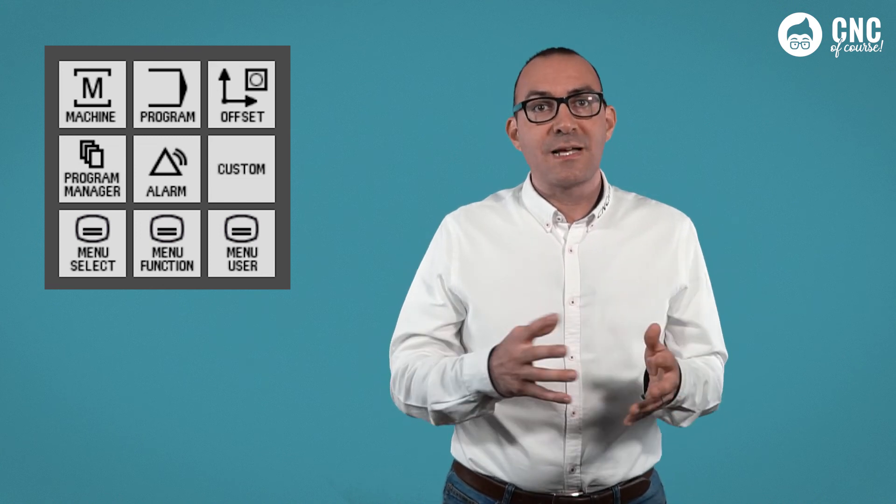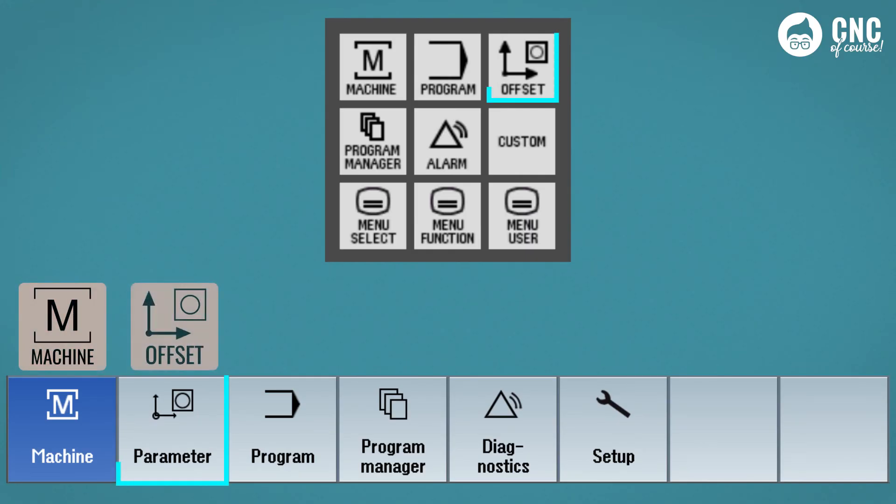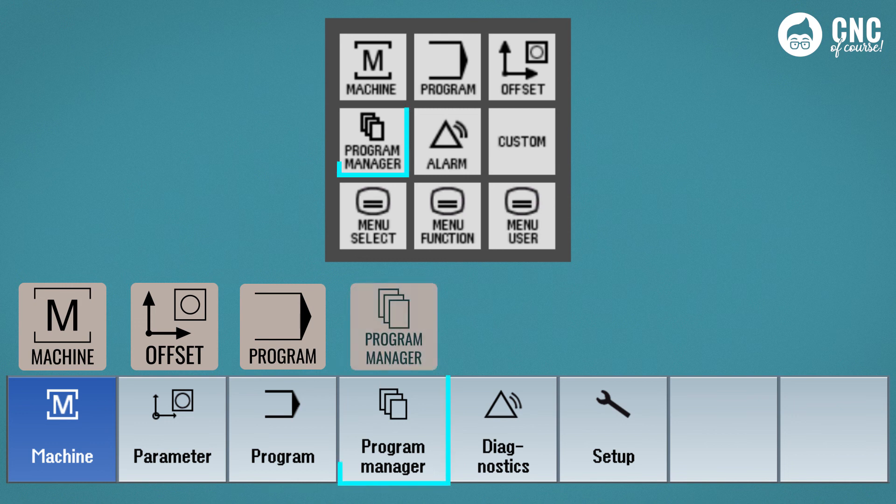Actually, there is also a shorter way, but available only with the extended keyboards. In the same group of keys where there is the Menu Select button, we find a Direct button. In fact, Siemens, in order to make the selection of the main windows even shorter, has created buttons that directly access the offset data, the program window, the program management, and the alarms.